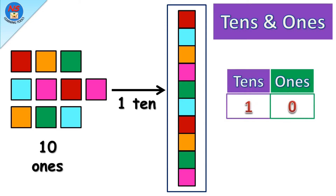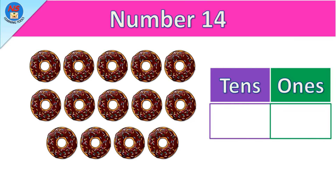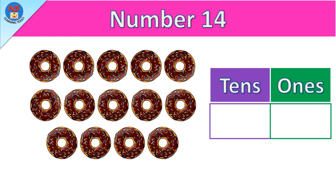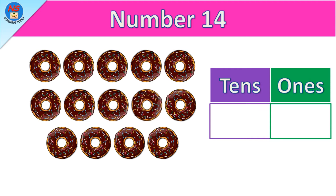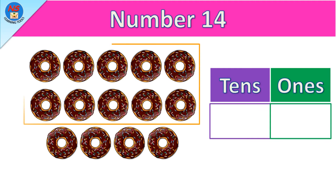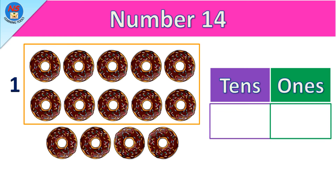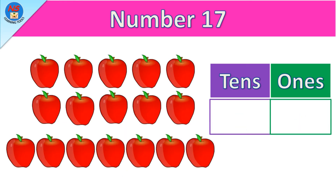Here we have fourteen donuts. So let's count: one, two, three, four, five, six, seven, eight, nine, ten. These ten donuts make one set of tens. Now let's count the remaining donuts: one, two, three, four. Four donuts. And it is represented as one tens and four ones.